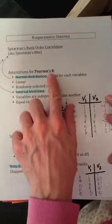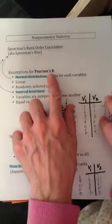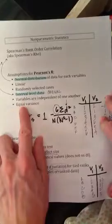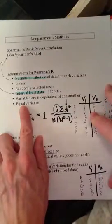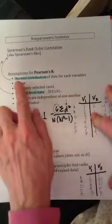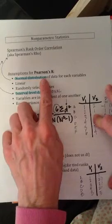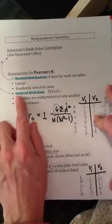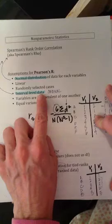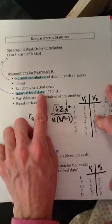But first, let's revisit the assumptions for Pearson's R correlation procedure. There are six different assumptions, as we talked about in the last video mini-lesson, one of which is that the data for both variables is normally distributed, and another is that the variable data is interval-level data.